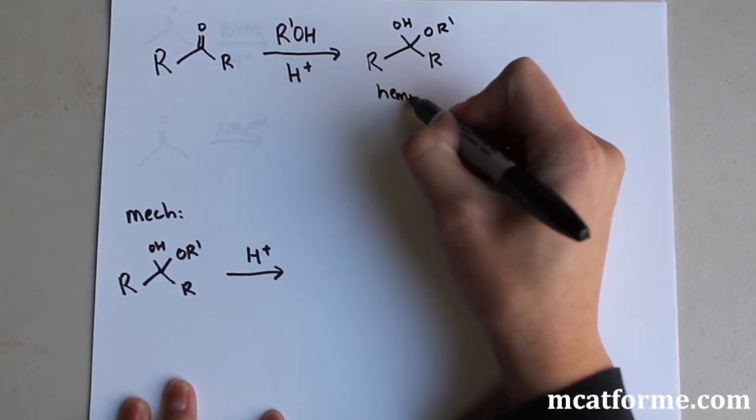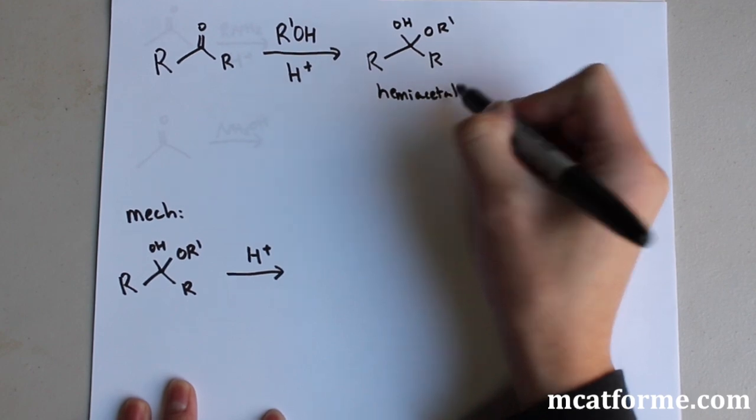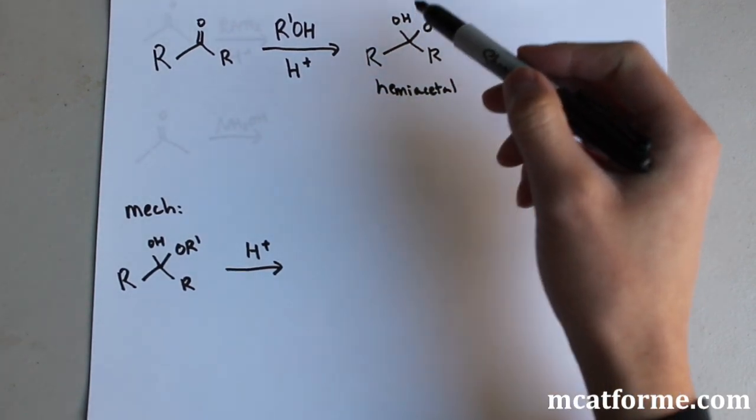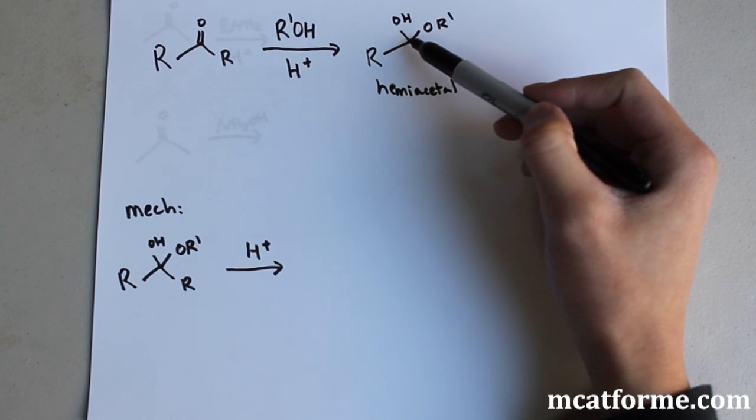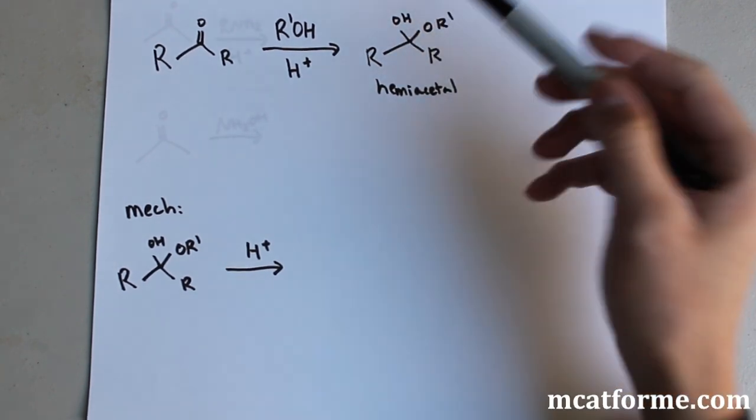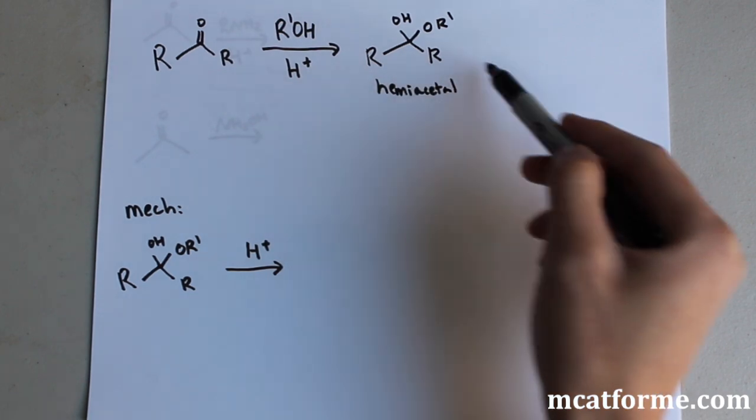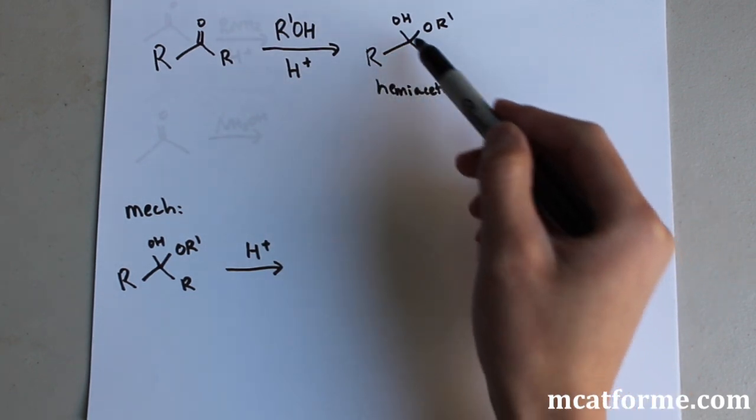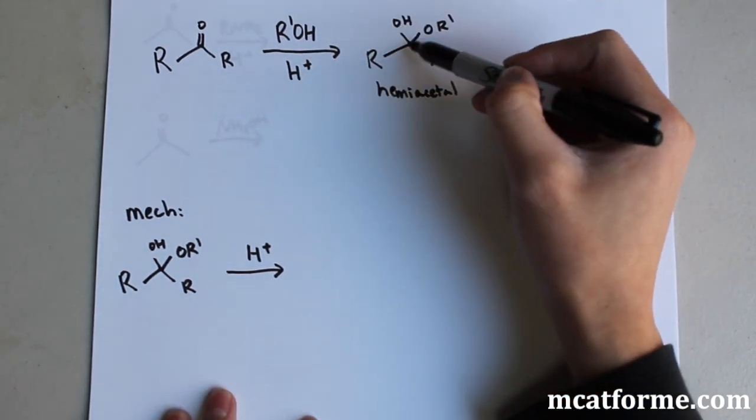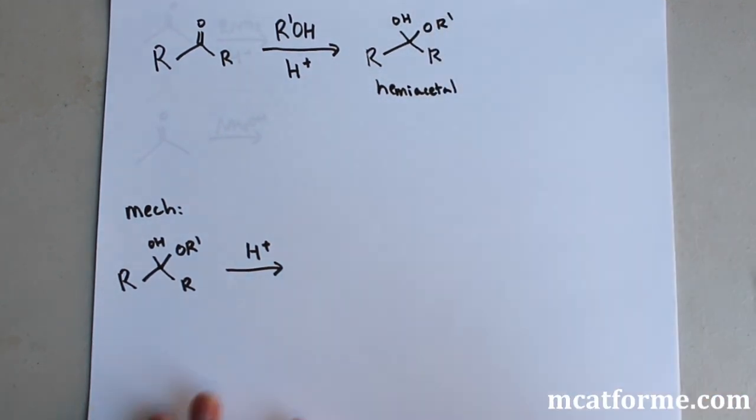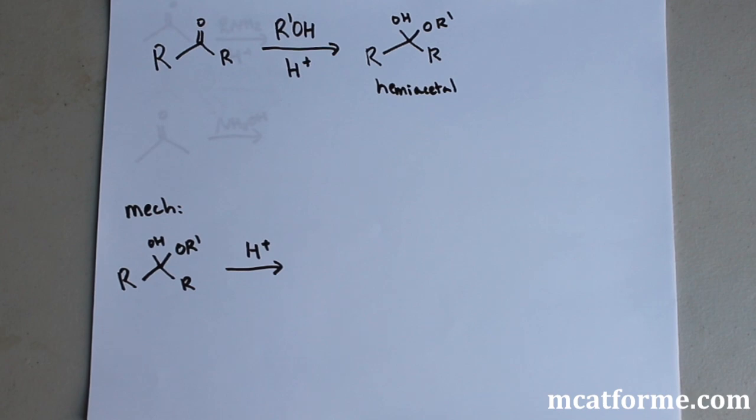And this is called a hemiacetal. So what it is, a hemiacetal has to have one carbon and it has to have an OH and an OR group attached to it. These two don't matter, the R's right here don't matter, but it has to have this OH, this C, and this OR prime in that specific order for it to be considered a hemiacetal.